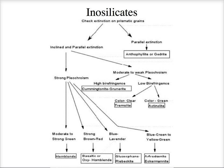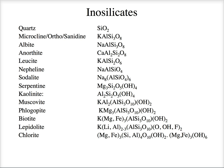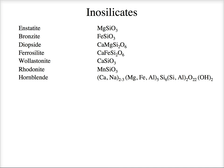I hope I've impressed you with what great minerals these are — very common, found in lots of rocks, pretty cool. Here's the mineral list you're responsible for: enstatite MgSiO3, bronzite FeSiO3 (both orthopyroxenes), diopside and ferrosilite (both clinopyroxenes), wollastonite (a pyroxenoid), rhodonite (another pyroxenoid), and hornblende — an amphibole. Mix and match all those different atoms and you can make all the other amphiboles.